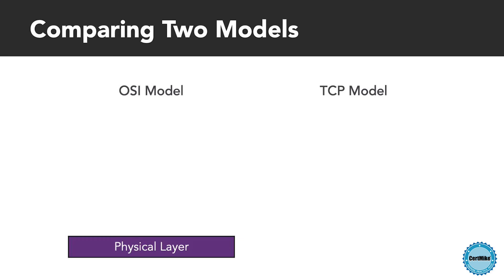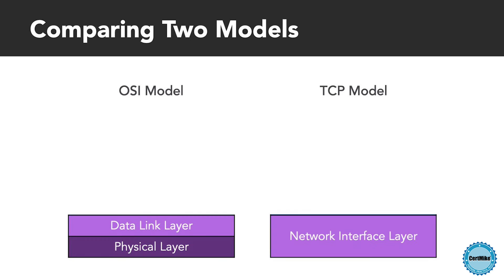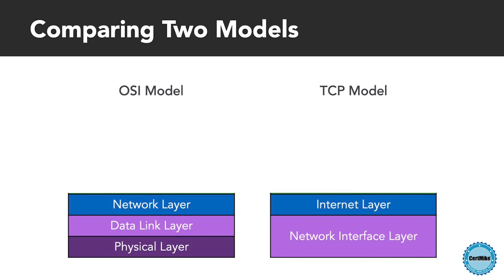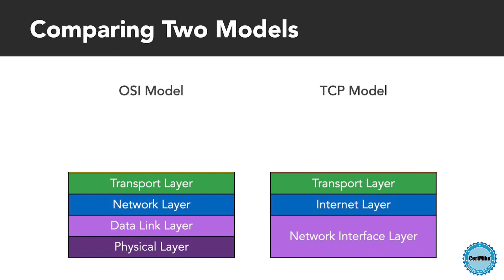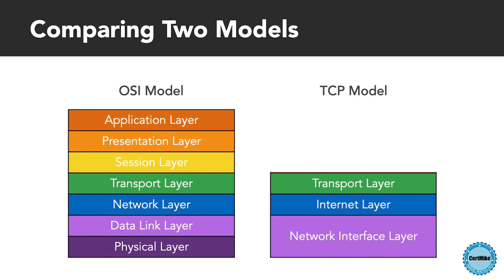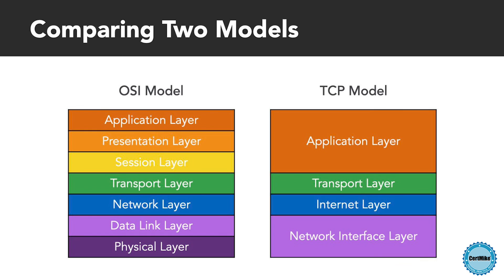In addition to the OSI model, you should also be familiar with the TCP network model. The creators of the TCP/IP network stack developed this model as they attempted to actually implement the more theoretical OSI model. Like the OSI model, the TCP model uses layers to describe different parts of a network communication, but it does so with fewer layers. The physical and data link layers of the OSI model are replaced by a single network interface layer in the TCP model. The OSI's network layer is simply renamed as the internet layer, while the OSI's transport layer retains the same name in the TCP model. At the top of the model, three layers are combined — the OSI model's session layer, presentation layer, and application layer are combined into a single application layer in the TCP model.